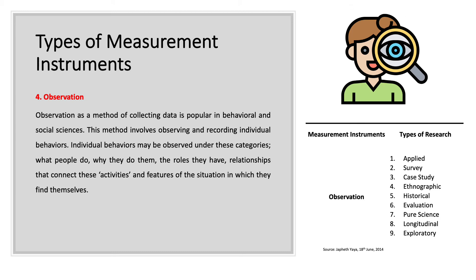The fourth type of measurement instrument is observation. Observation as a method of collecting data is popular in behavioral and social sciences. This method involves observing and recording individual behaviors. Individual behaviors may be observed under these categories: what people do, why they do them, the roles they have, relationships that connect these activities, and features of the situation in which they find themselves.